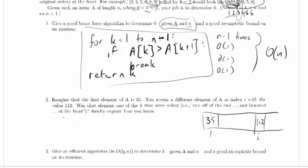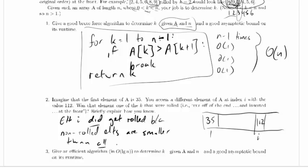So element i did get rolled because non-rolled elements are smaller than all rolled elements, which are from the original end of the sorted list. So I know it got rolled because all the non-rolled elements are smaller than all the rolled elements, and 112 is larger than 35.